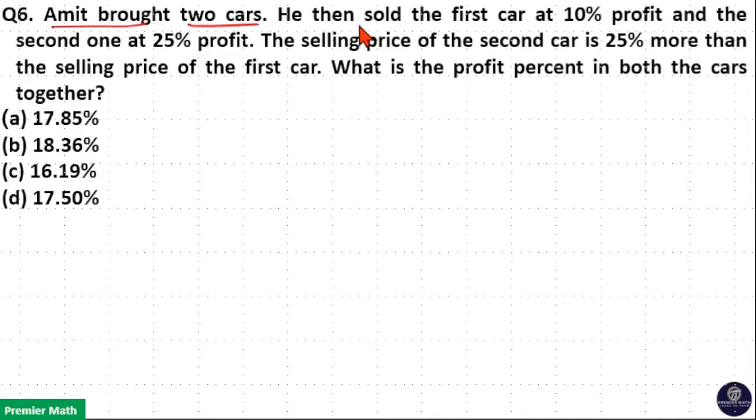Amit bought two cars. He then sold the first car at 10 percentage profit and the second one at 25 percentage profit. The selling price of the second car is 25 percentage more than the selling price of the first car. What is the profit percentage in both the cars together?